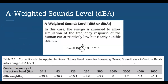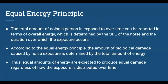A-weighted sound corrections can be applied to measured SPL values — for example, corrections of minus 39 and minus 63 dB at low-frequency center bands, with zero correction applied around 1000 Hz. The formula for this is shown here, though you won't need to calculate it.